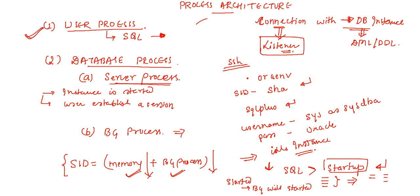Whenever the Oracle instance is started, background processes will be started. But for the server process, until and unless a user establishes a session, the server process will not be created. Once a user session is establishing connections, the server process will be generated and will take into consideration whatever the user process fires - the server process has to execute it. And background process? Once the instance is started, the background process is automatically started.